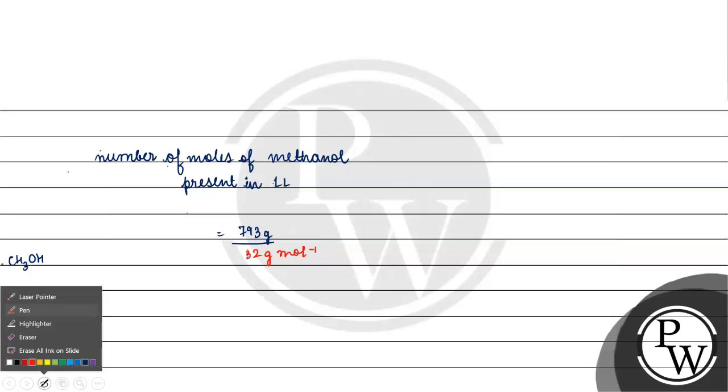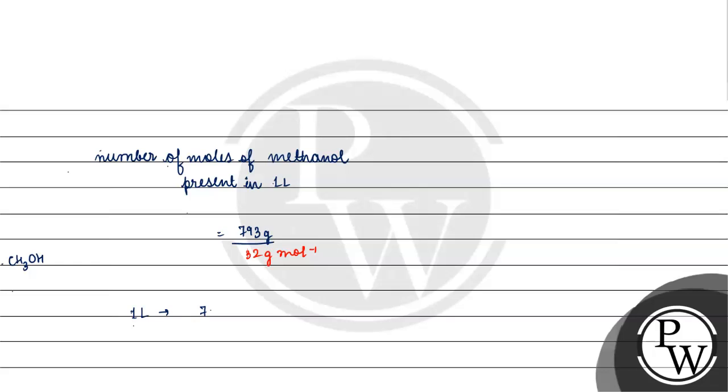We have number of moles of methanol in 1 liter: 793 by 32 moles of methanol. So we have to know that in 1 liter, there are many moles.